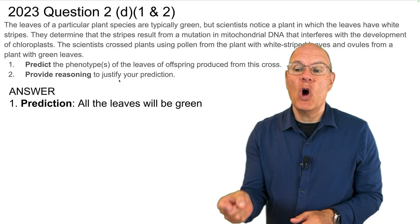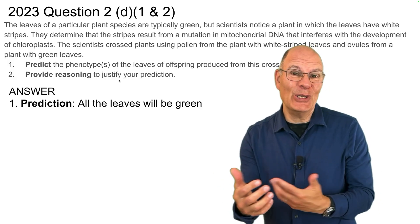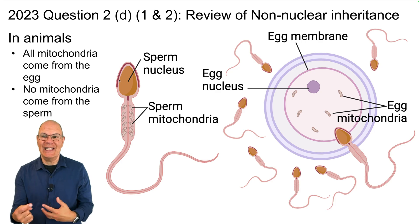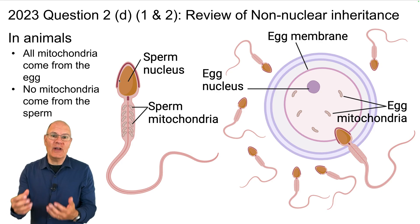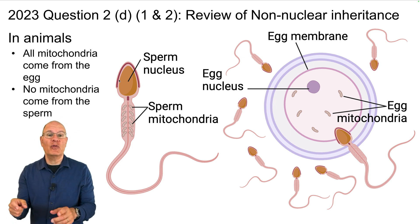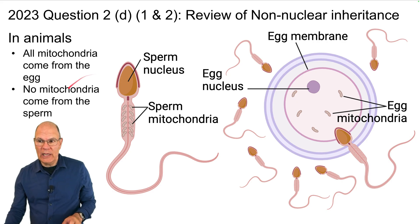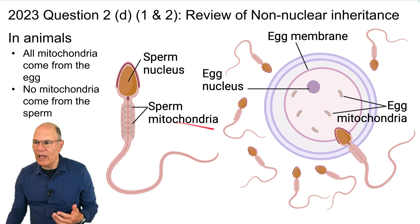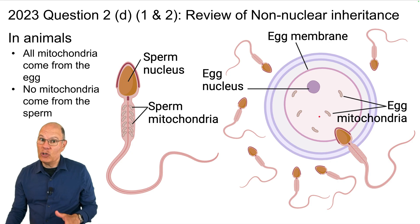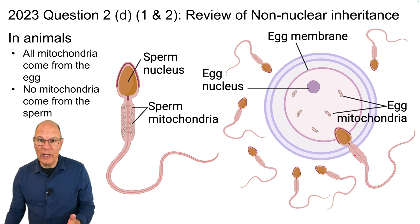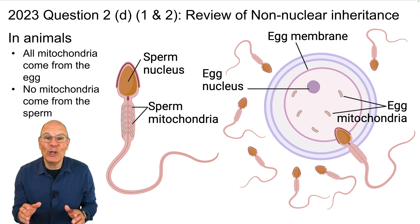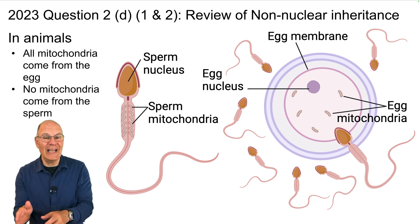Here's the correct prediction: all the leaves will be green. To see why, we need to look at non-nuclear inheritance. In animals, non-nuclear inheritance involves mitochondria, and all mitochondria come from the egg — not from the sperm. Here's a sperm with its nucleus and mitochondria at the front part of the tail. During fertilization, the egg and sperm fuse; the nuclear material from the sperm enters the egg, but no mitochondria from the sperm enter the egg. All mitochondria in the offspring derive from the mother.